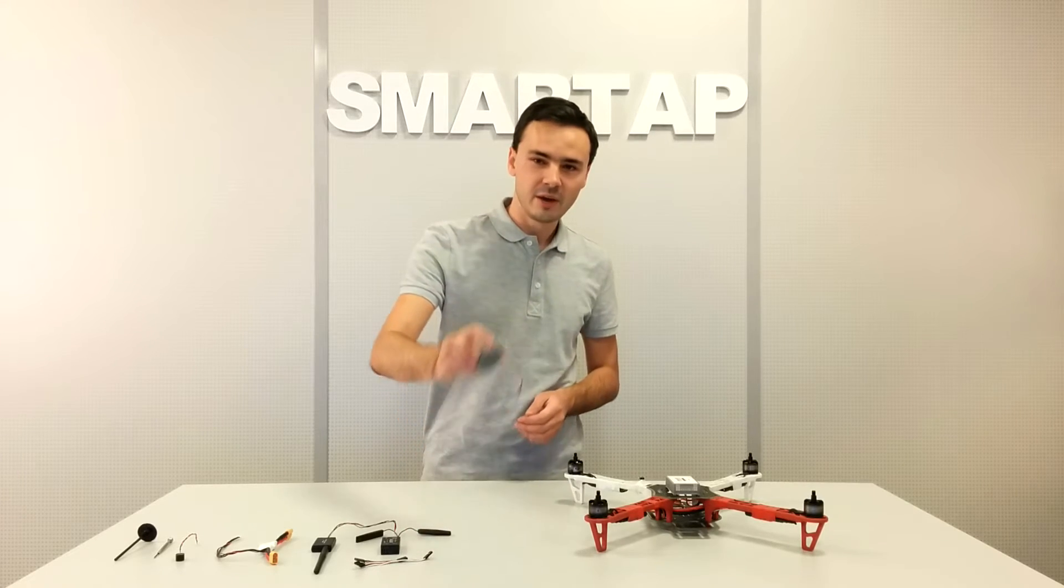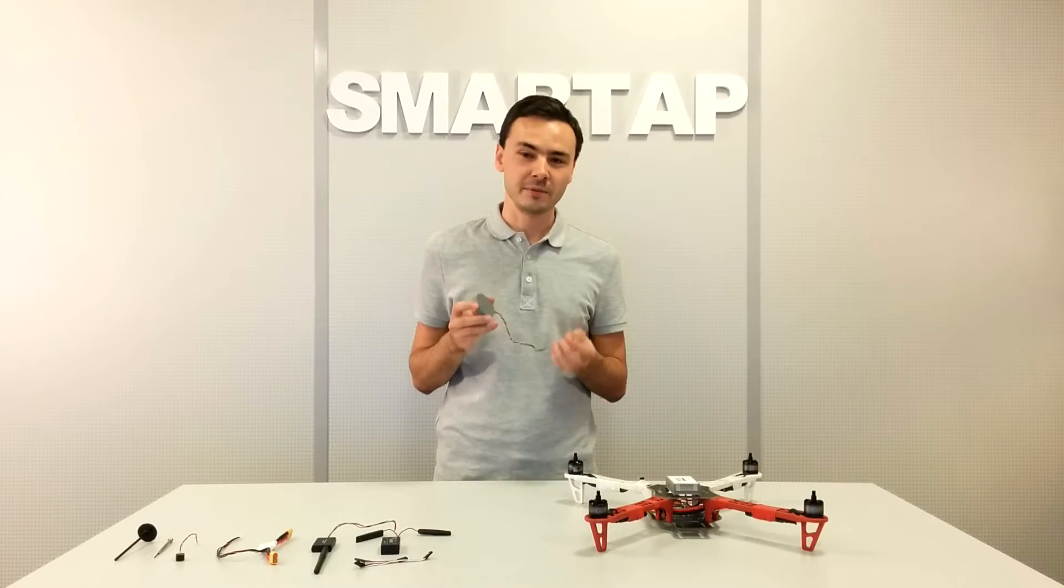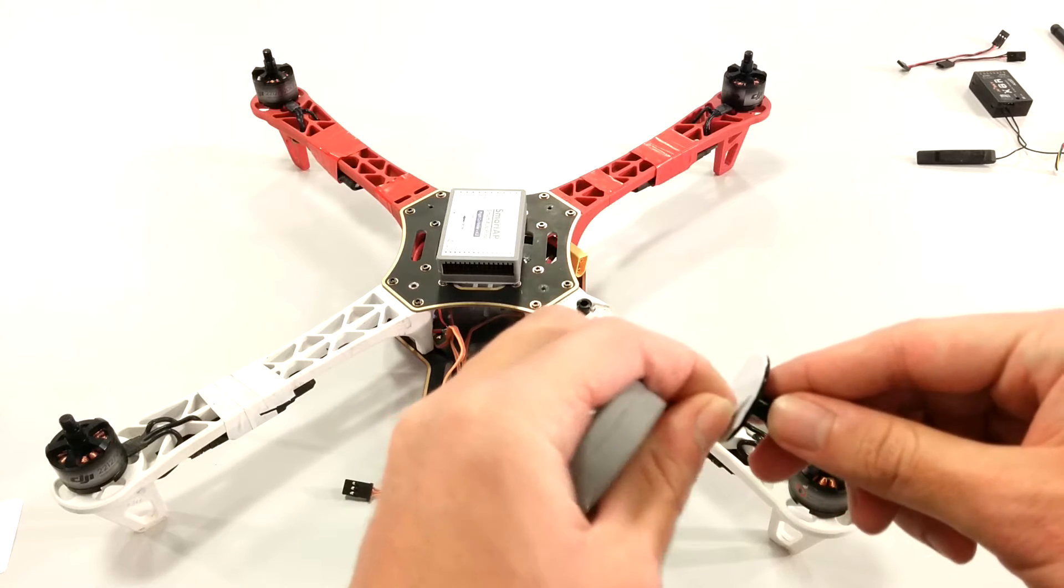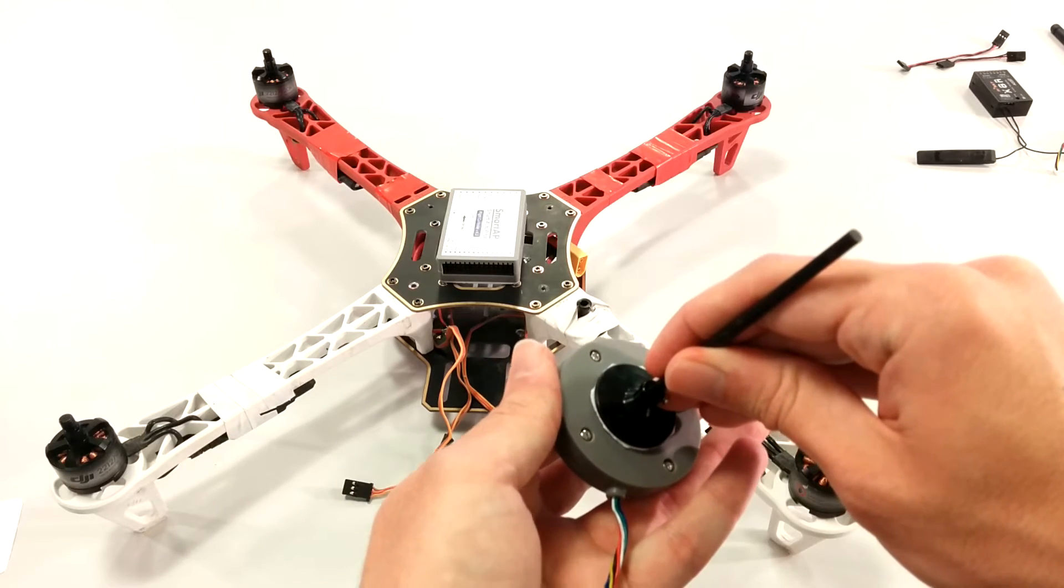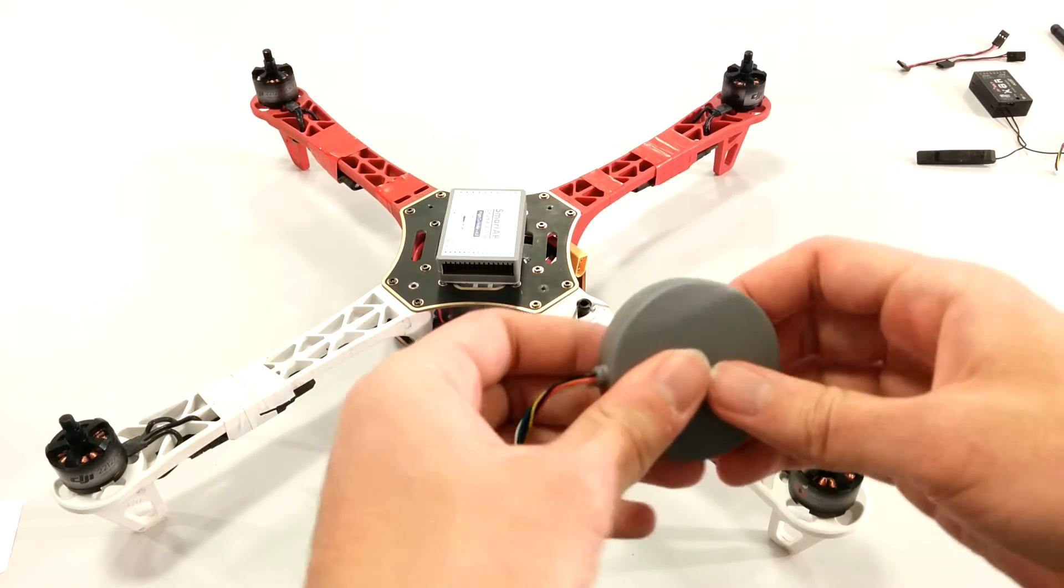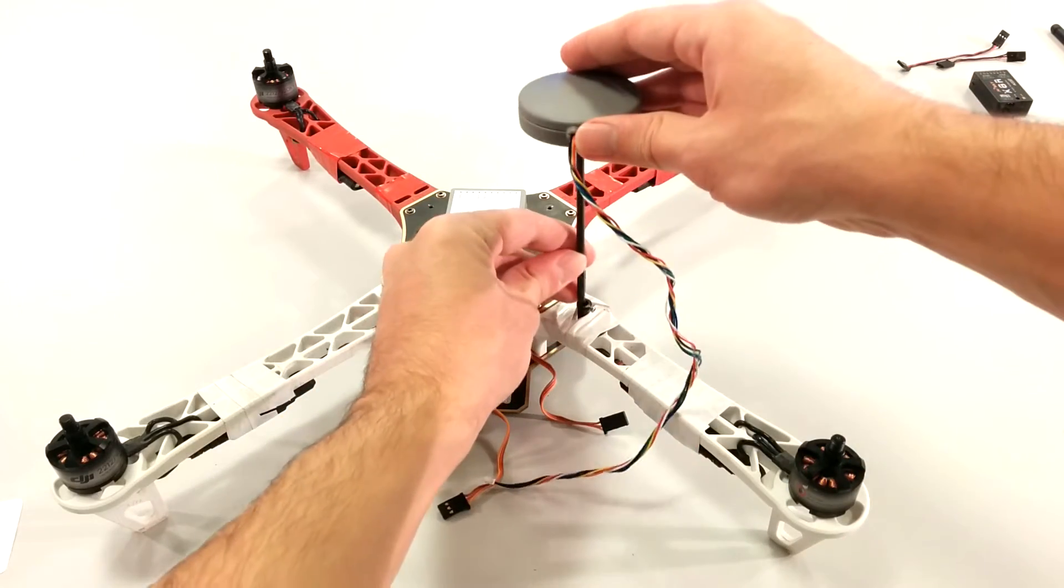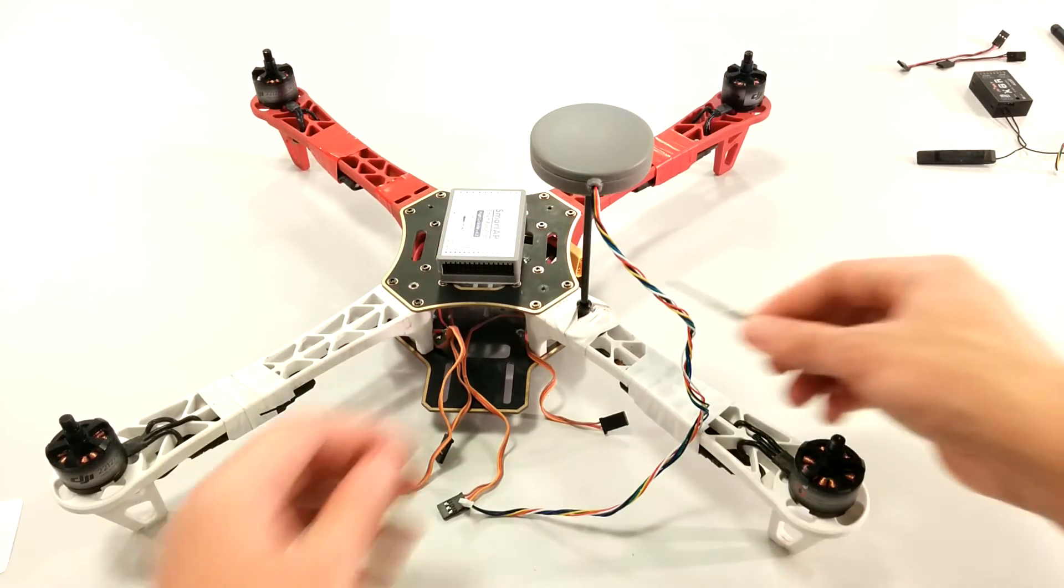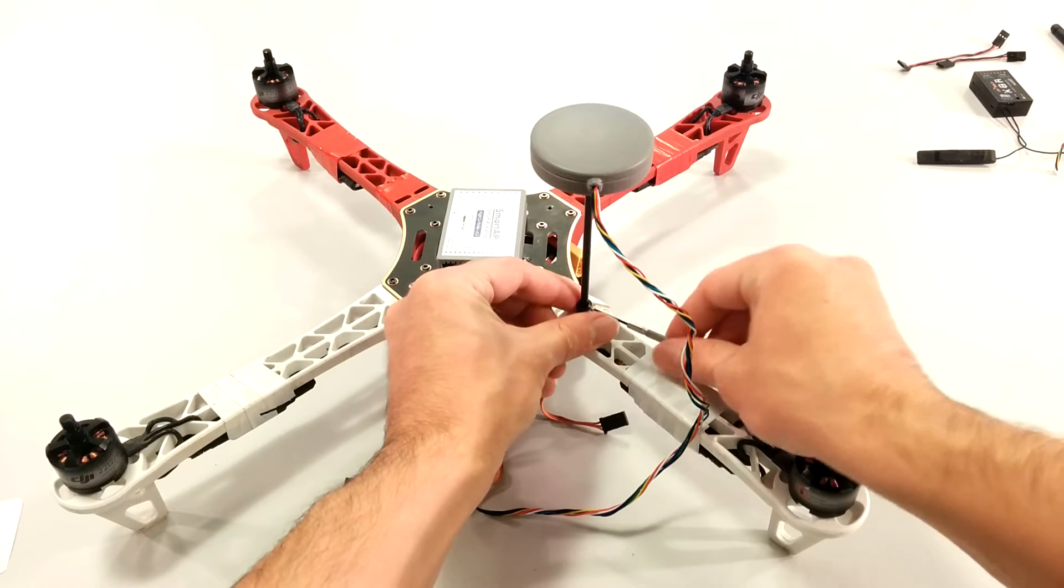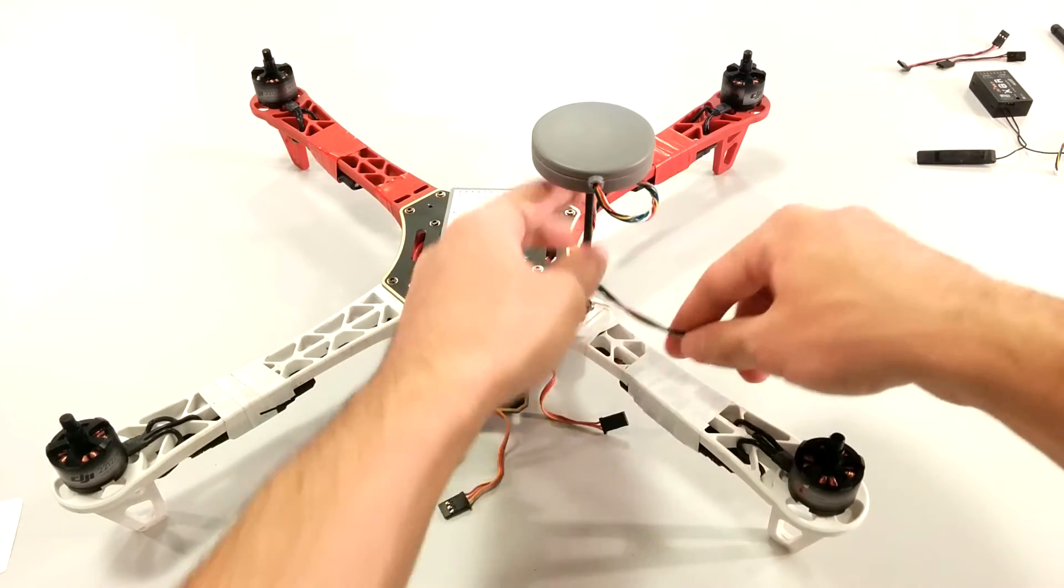Alright, now let's mount the GPS and magnetometer module. Make sure to mount it as far from the electromagnetic sources as possible. This will result in better flight performance later. Usually, it can be done with a mast. Let's attach the GPS module to a mast. Now we can mount the mast on our airframe. Make sure to align the GPS module with X and Y axis of the airframe. If you want to mount it in any other orientation, it's also possible and can be configured later in the software. Twist the cable around the mast if it's too long, as in my case.